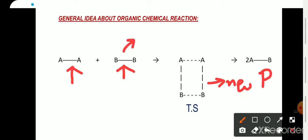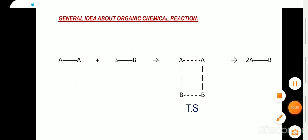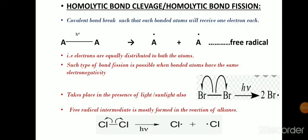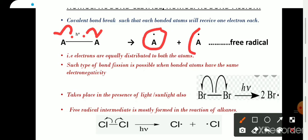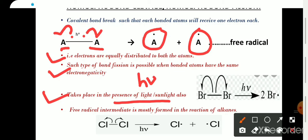First we will see about homolytic cleavage. In homolytic bond cleavage, the covalent bond breaks in such a pattern that each of the bonded electrons will move to each of the bonded atoms, and finally there will be a formation of free radicals — that is, electrons are equally distributed to both atoms. Such type of bond fission is possible only when both bonded atoms have the same electronegativity, and it takes place in the presence of light, denoted by hν. Most reactions of alkanes proceed via free radical formation.